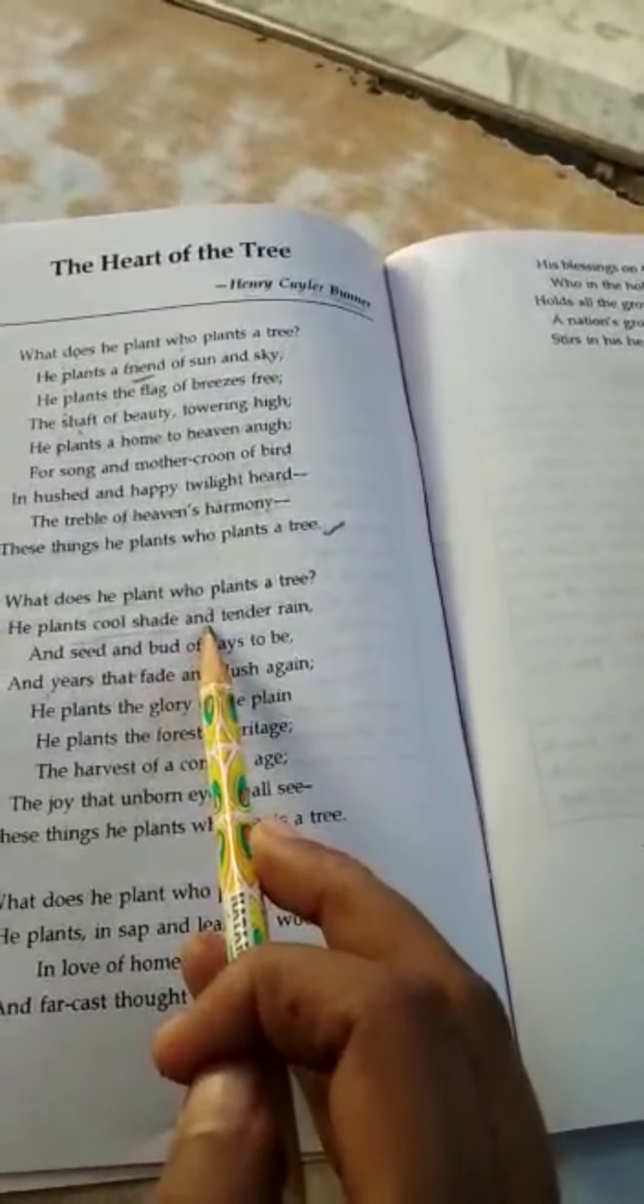So the poet in these lines says that the person who plants a tree plants a harvest, means outcome of a crop. He says that a person who plants a tree provides happiness which the coming generation would see, would enjoy when they come in the world. These things he plants, who plants a tree. And at last the poet himself says that all these things are done by the person who plants a tree.